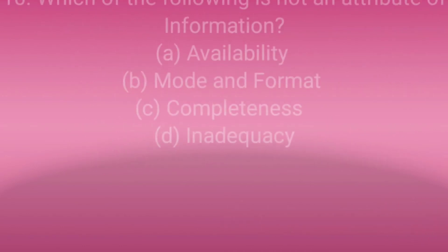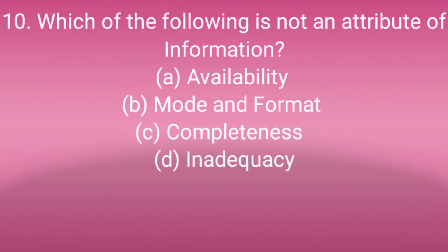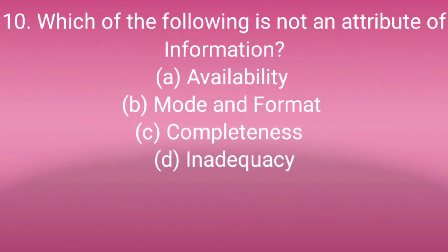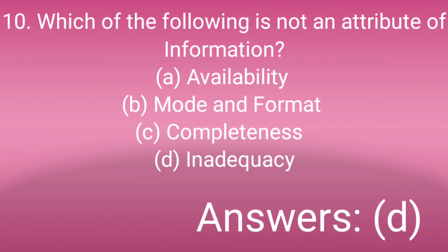Question number ten: Which of the following is not an attribute of information? Option A: Availability, Option B: Mode and format, Option C: Completeness, Option D: Inadequacy. The answer is D — Inadequacy is not an attribute of information. Answer is D.